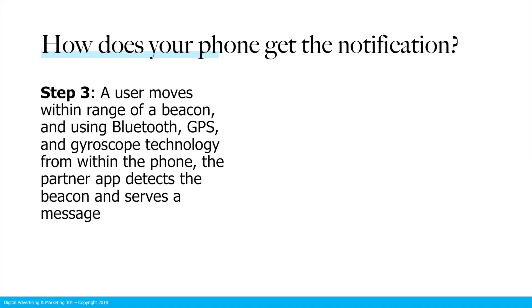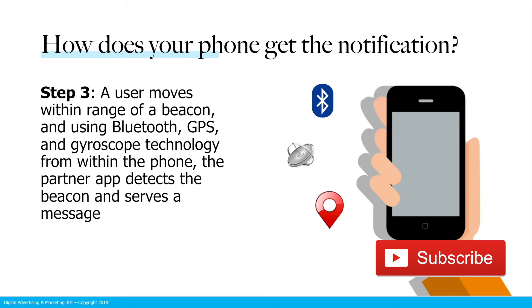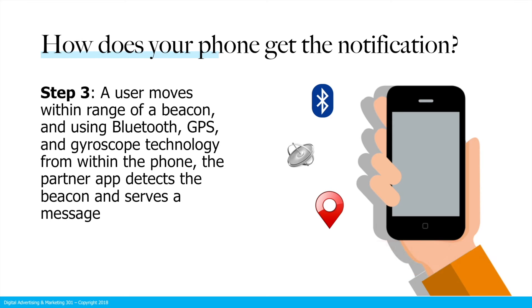The third step: how does your phone actually get the notification? First, a user has to move within range of a beacon. Then, using generally Bluetooth technology — though some could use GPS as well as a gyroscope on your phone — the partner app would detect the signal coming from that physical beacon and serve a message on the phone. That message would come from the app that you happen to have on your phone that is partnered with this beacon company.